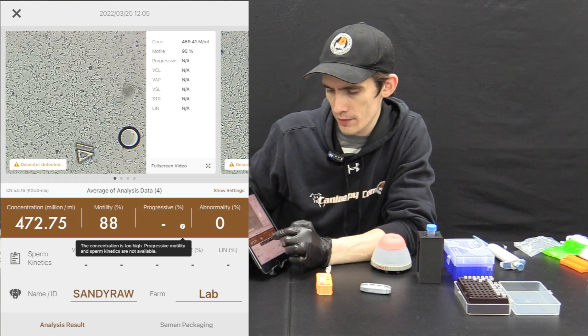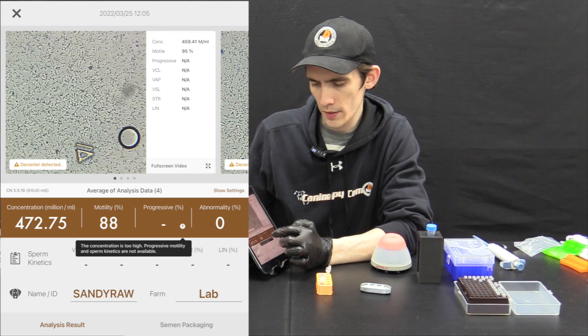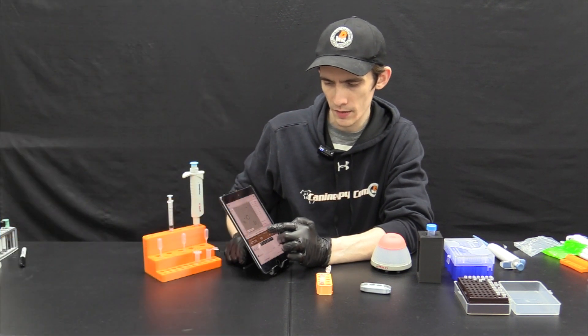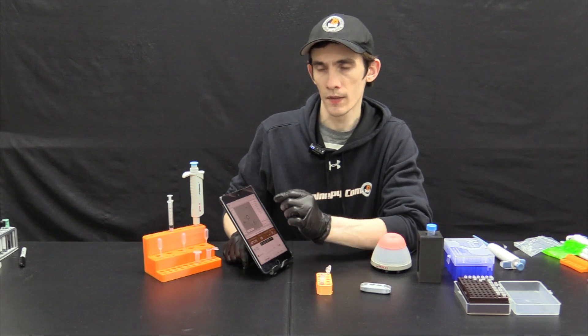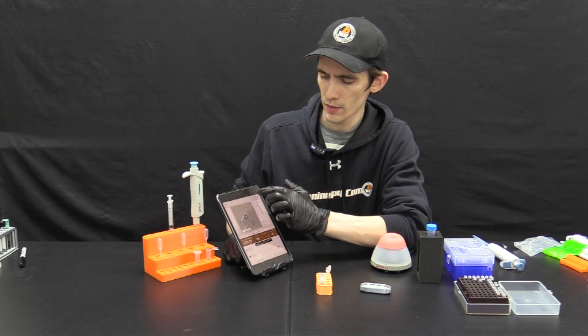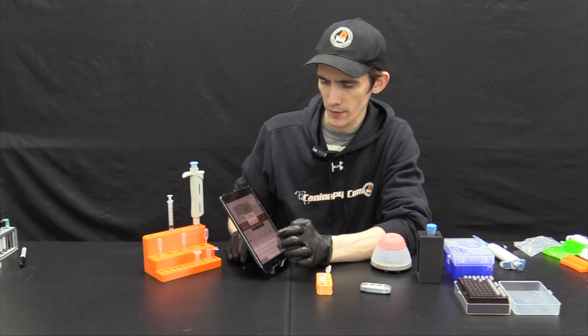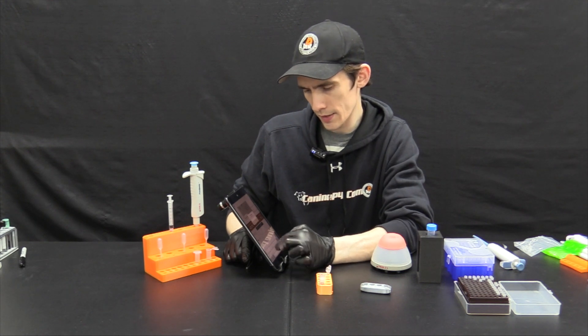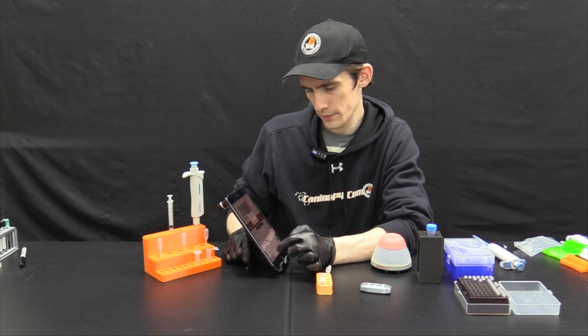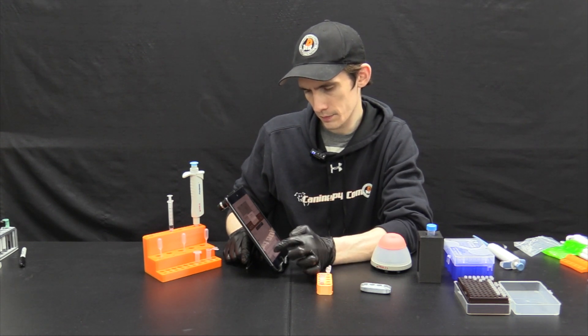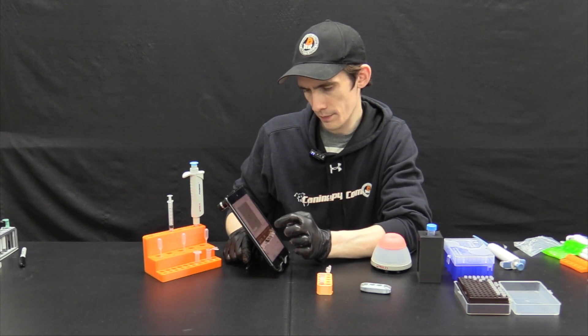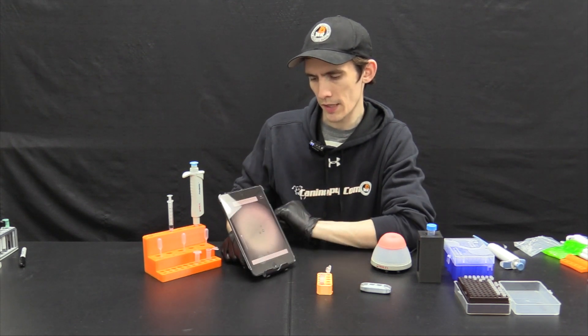We do not have kinetics either, so we're going to need to dilute this down to the 10 to 75 million per milliliter range. The next step is simply to click the check mark on top and enter the ID for the historical and go back to the main screen.